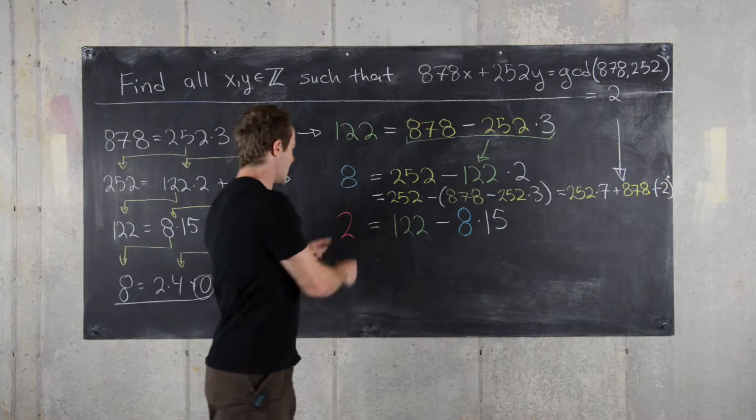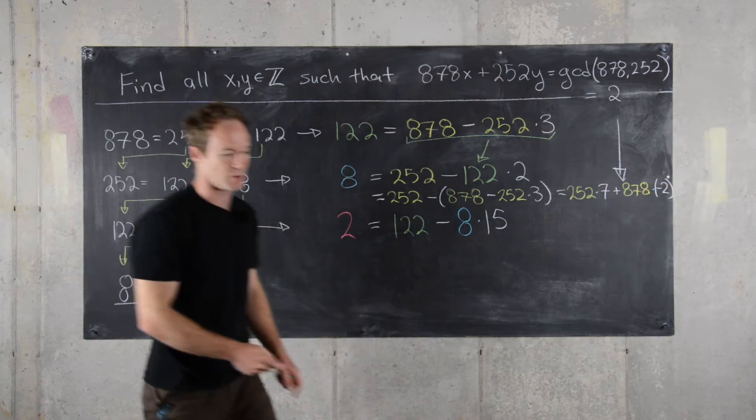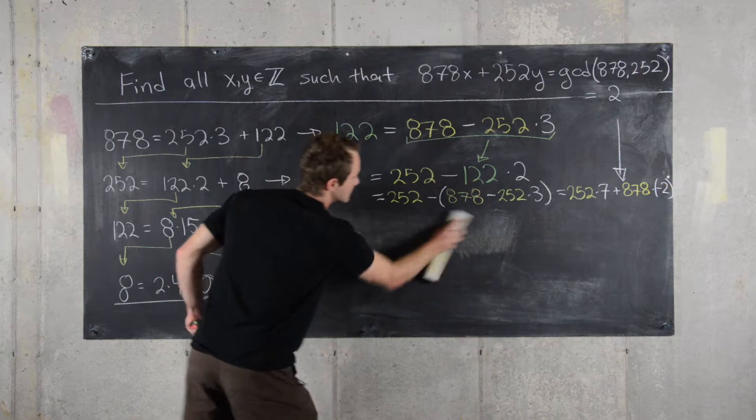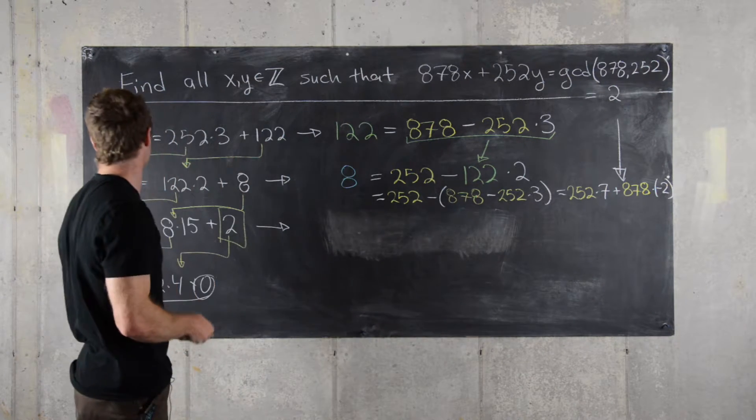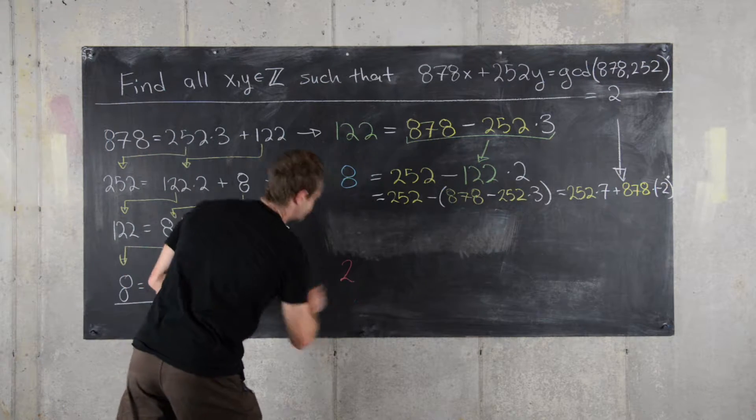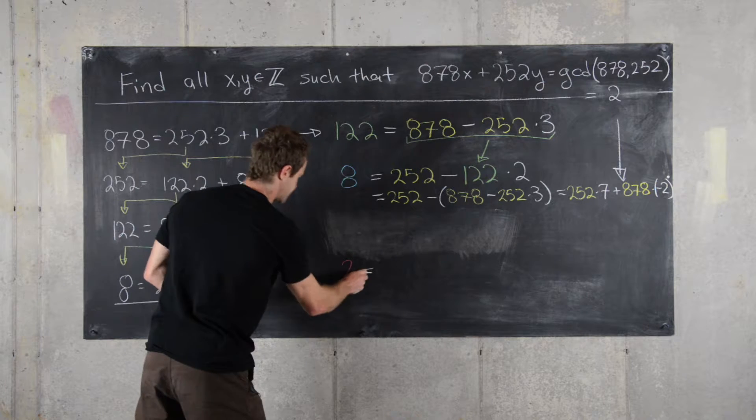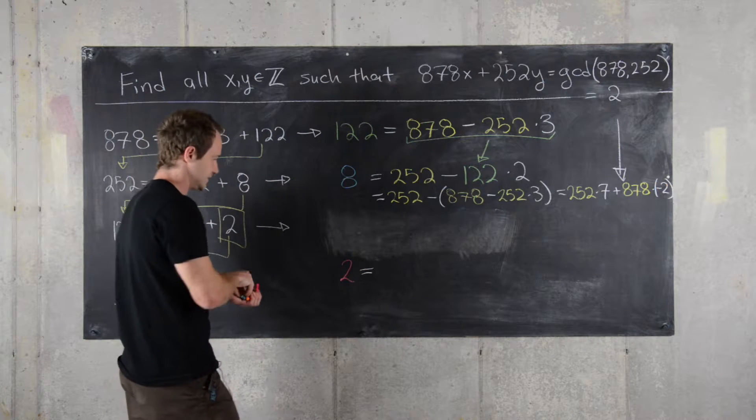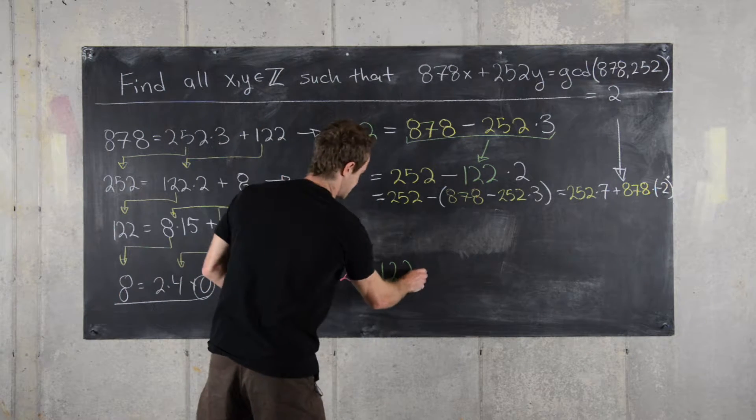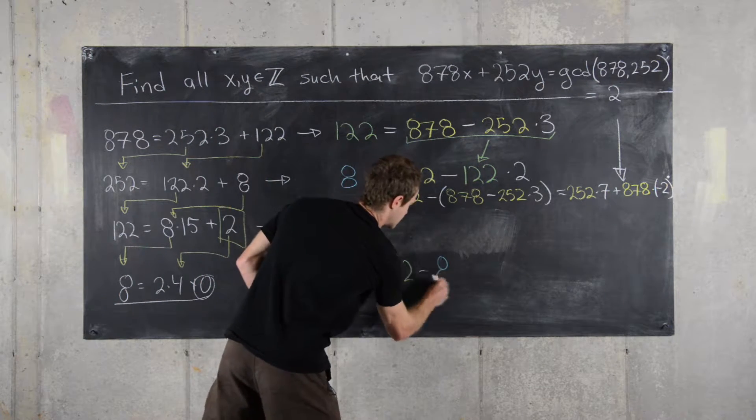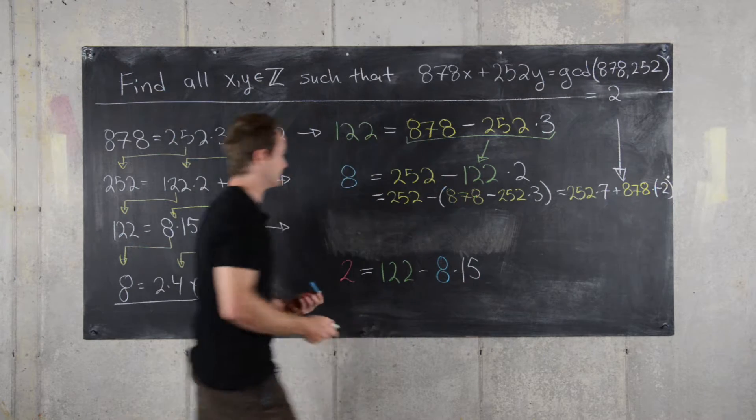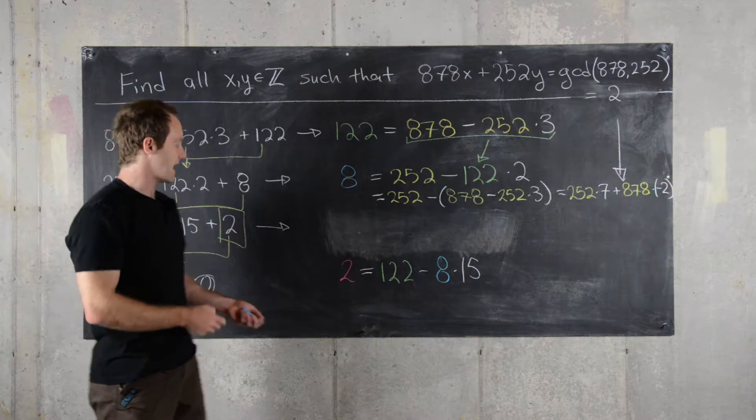Now I'm going to go ahead and move this down so we have a little bit more room. So here I'll move this down, I'll have 2 equals 122 minus 8 times 15.